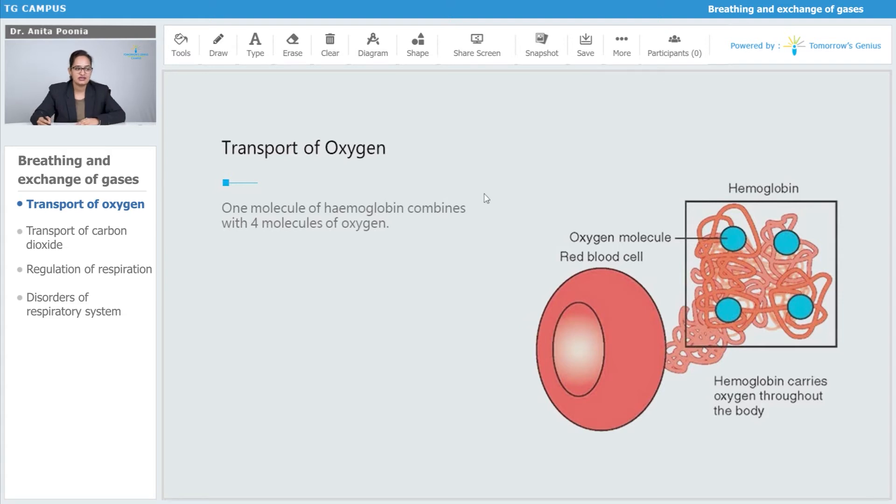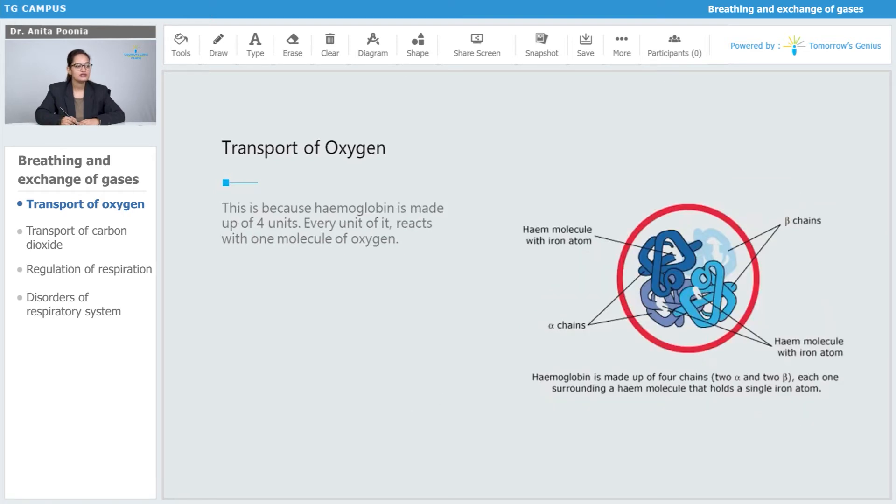You can very clearly see the oxygen molecule, the red blood cells, and the hemoglobin carrying oxygen throughout the body. This combination is because hemoglobin is made up of four units, and every unit of it reacts with one molecule of oxygen.